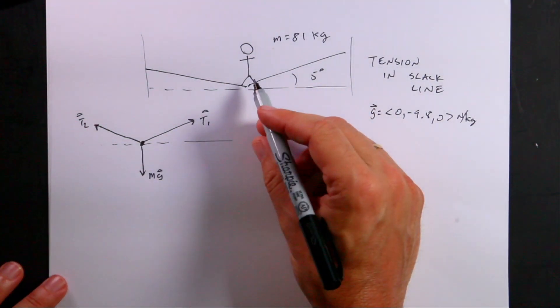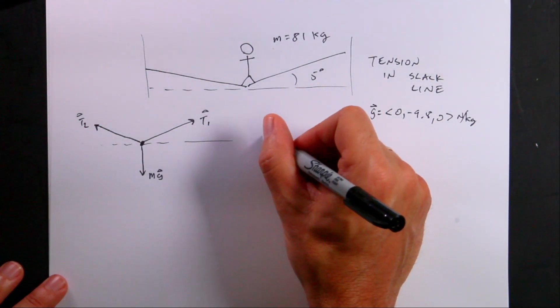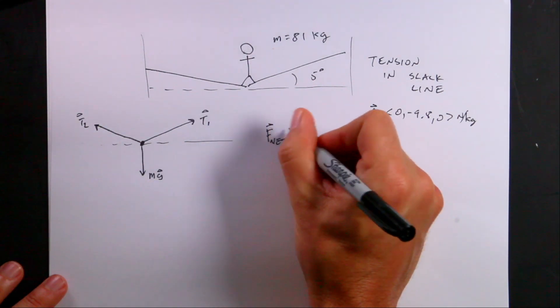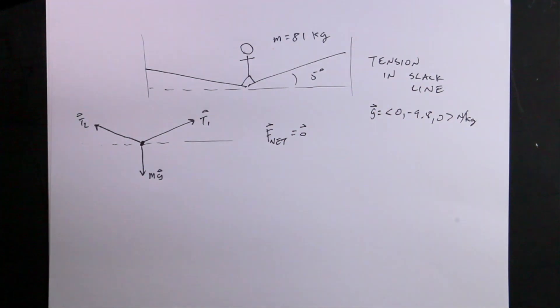So if the person's stationary and at rest, then I can say the net force acting on the person is equal to the zero vector. This is how we define equilibrium.